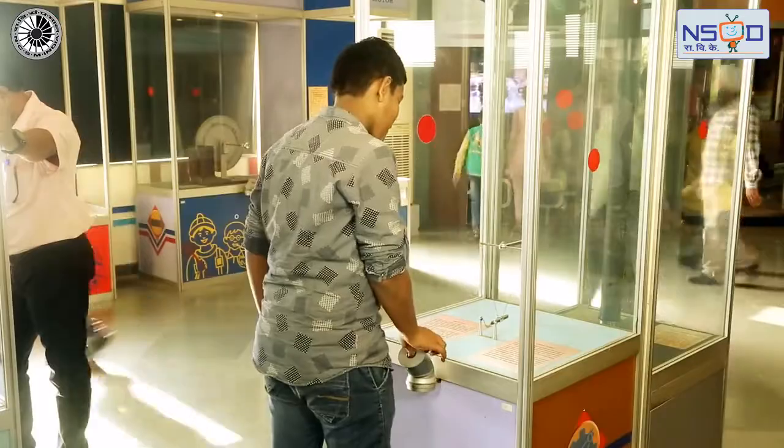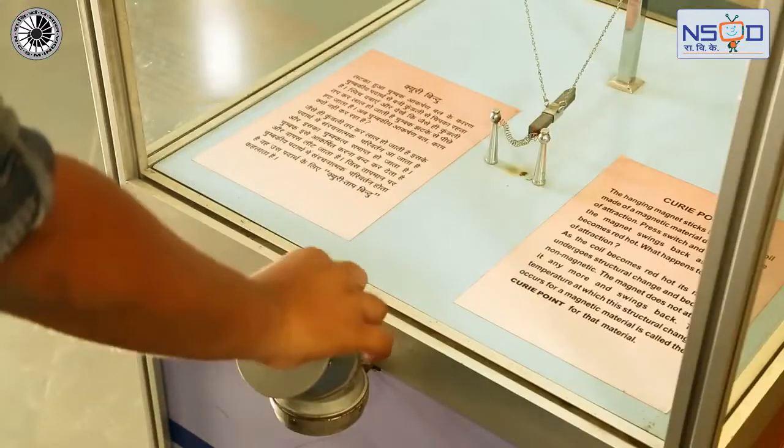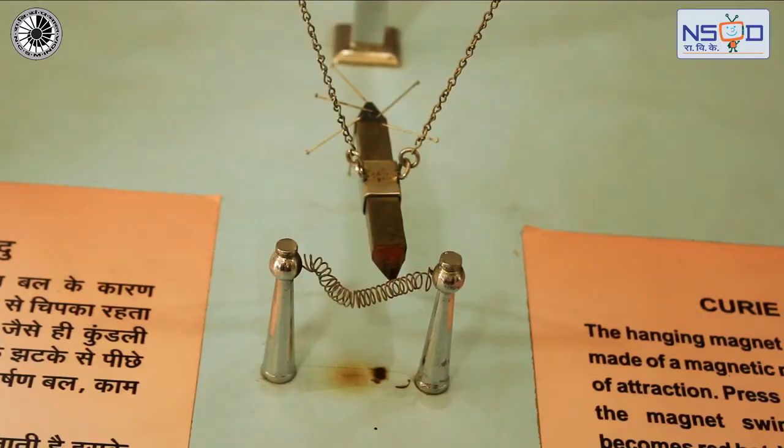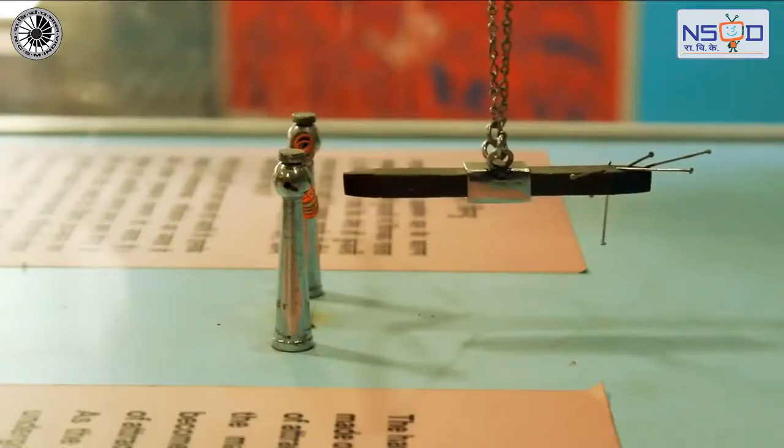When you bring a piece of magnet towards an iron coil, it will be attracted. But when you heat the iron coil to a high enough temperature, you will find that the magnet loses its ability to magnetize it.